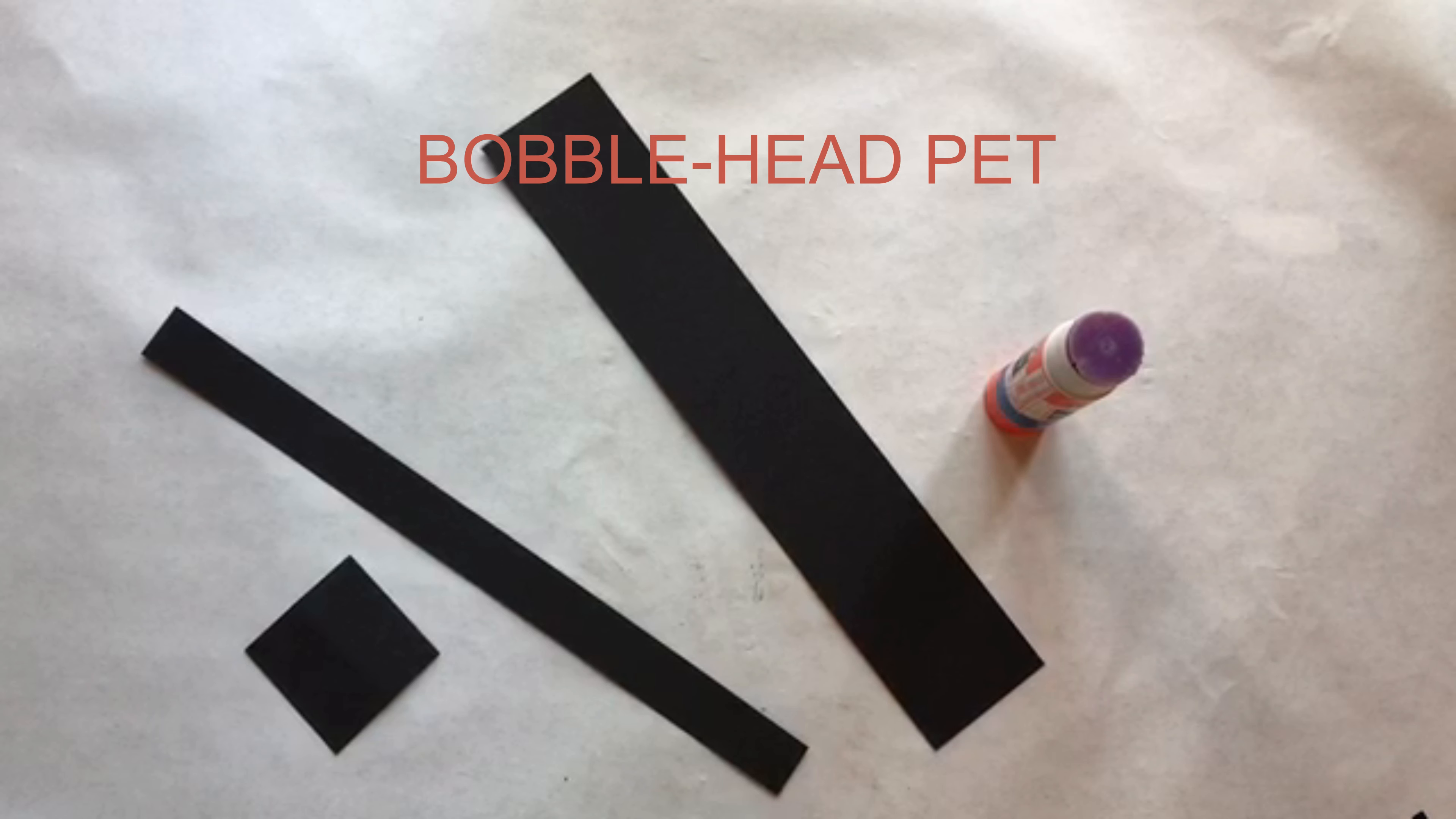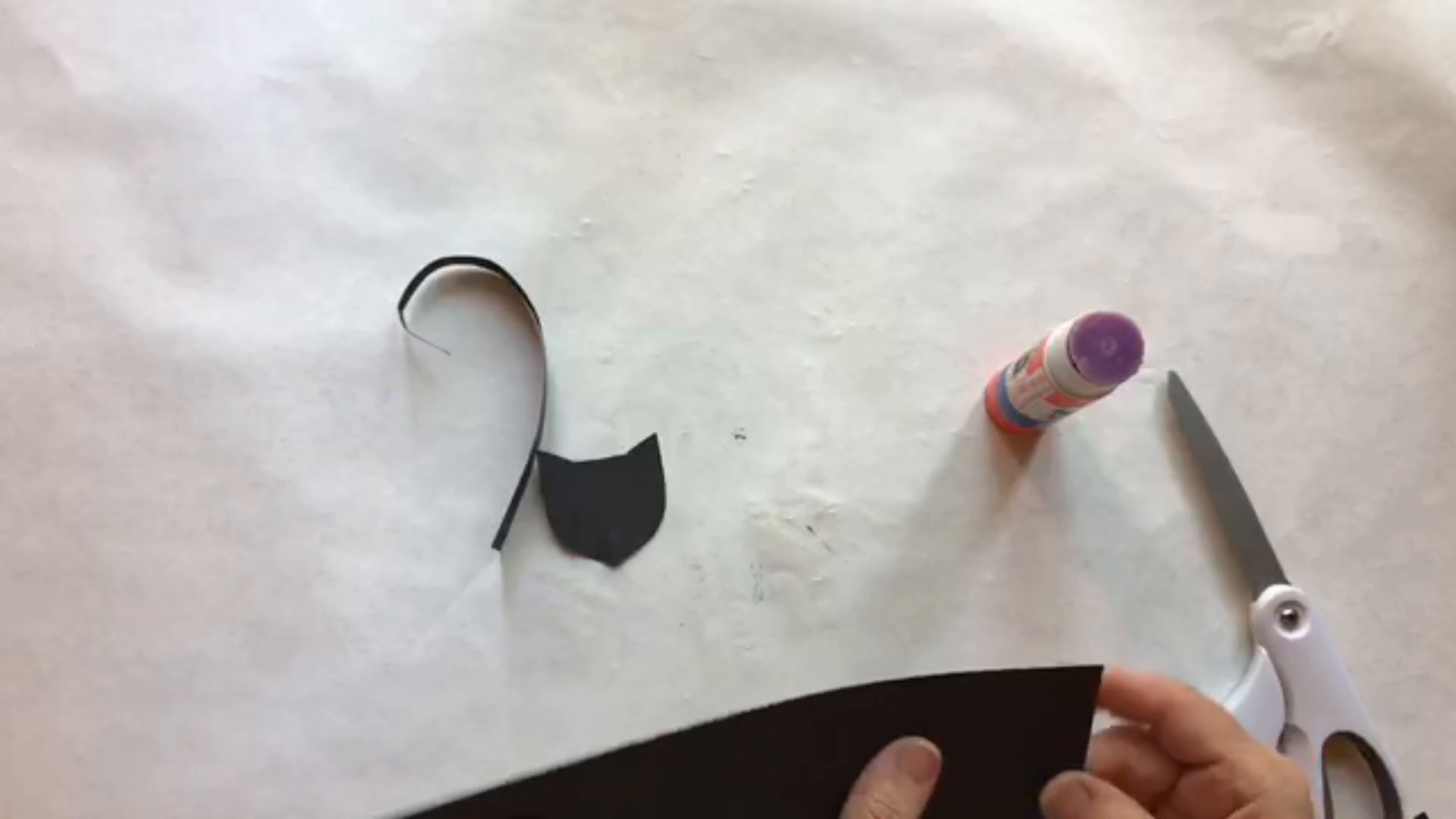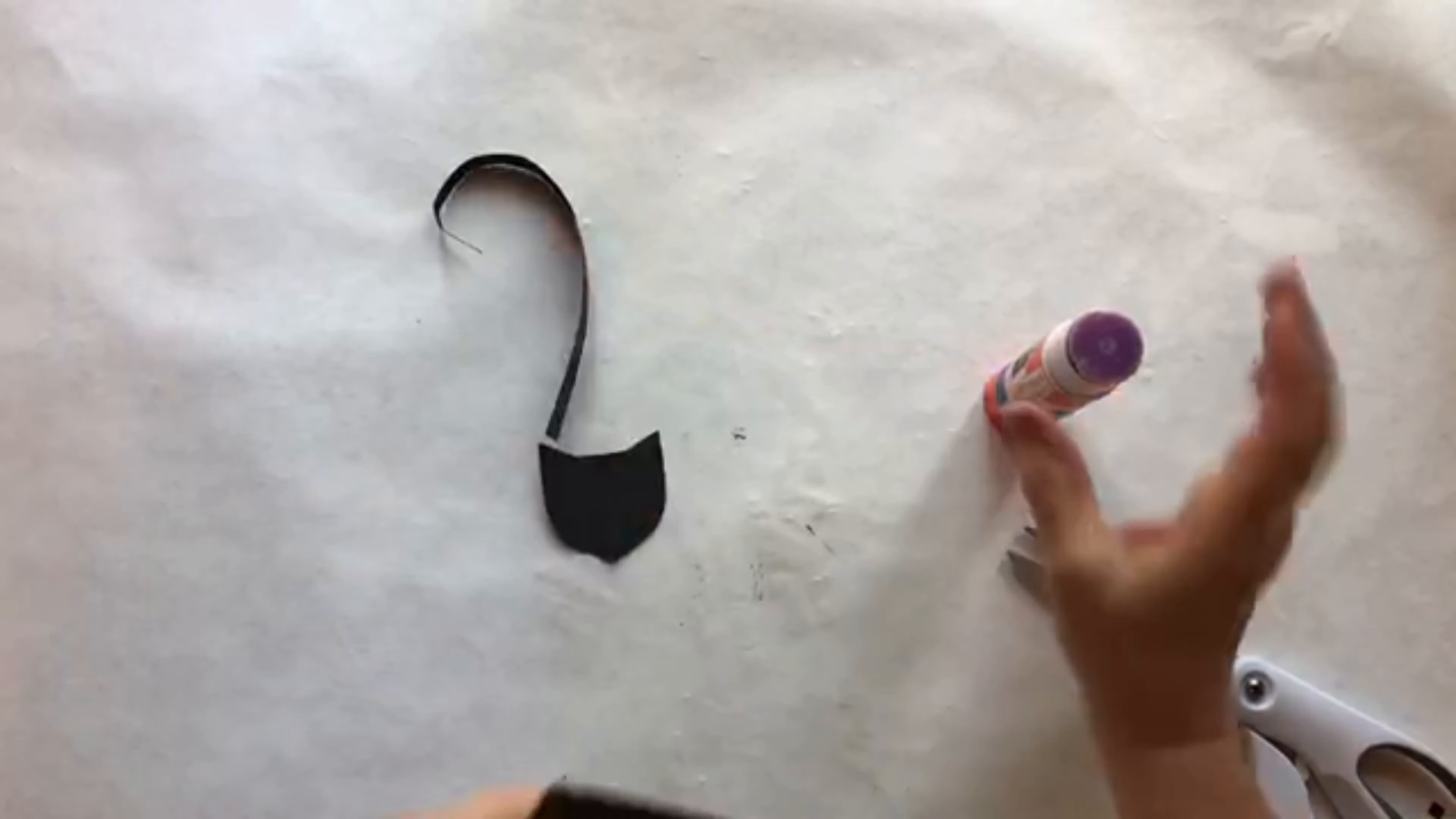To cut the head I folded the square in half. You can draw the head out first if you want but I'm just eyeballing it. Next comes the tail, I cut mine into a long triangle and curl the end. I'm making the body next, starting with the paws. I'm folding the end, giving it about a half an inch. Now I'm cutting two half ovals for the feet. Again you can draw them out first.